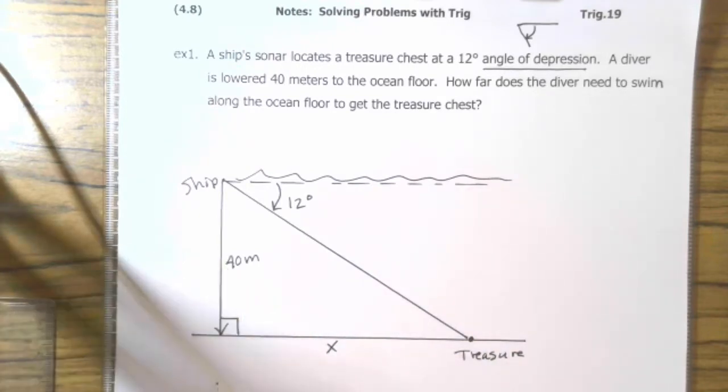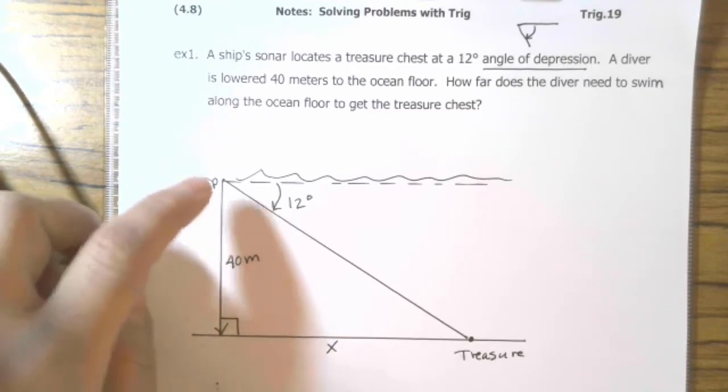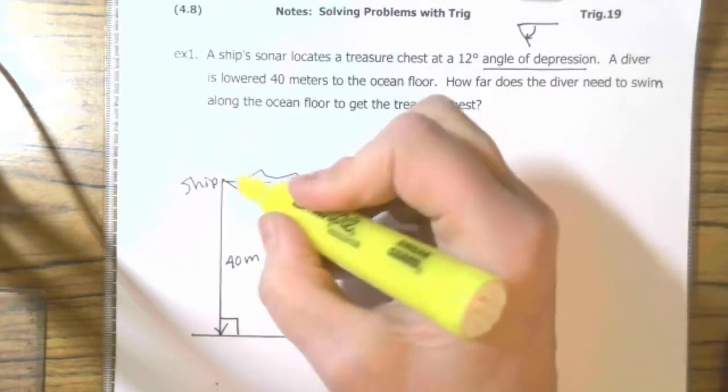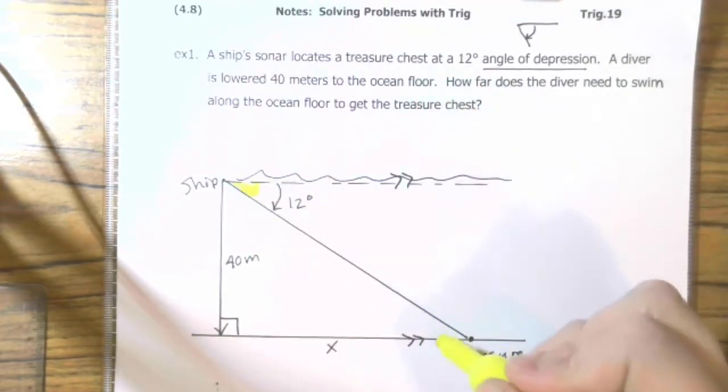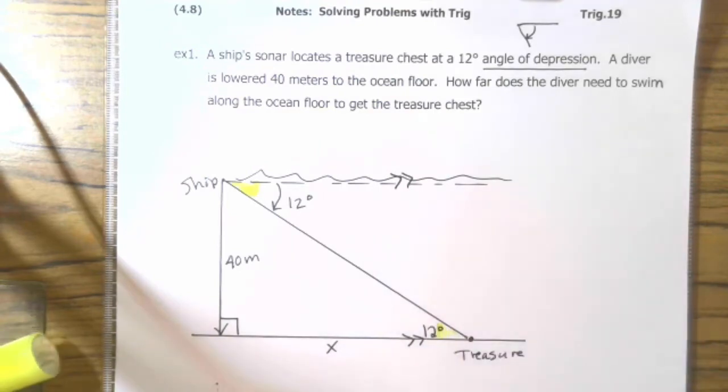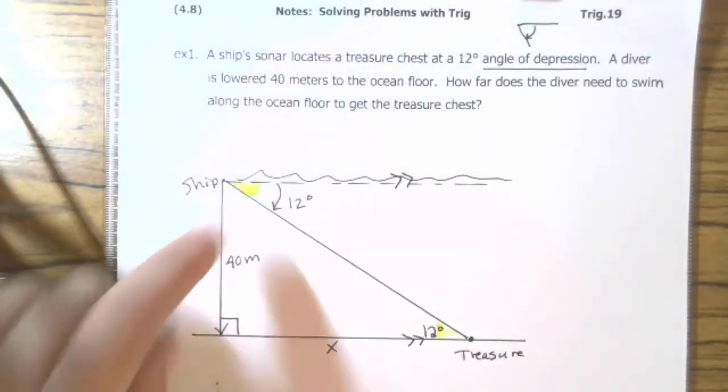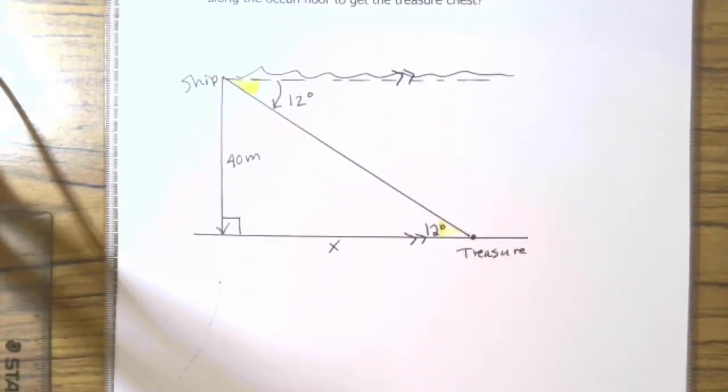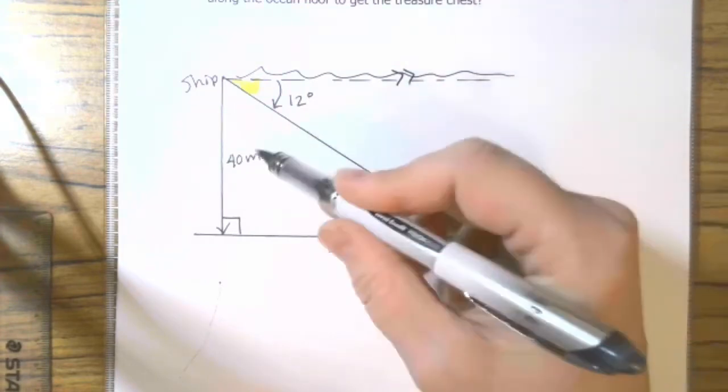So, right now, I have one side to a triangle and an angle. And there's a couple ways you can do this. One of them is by using the fact that alternate interior angles are congruent. So, you assume that the ocean floor and the water are parallel. So, alternate interior angles are congruent. That means that this is 12 degrees. That's one way to do it. You could also subtract from 90 and get the angle there. But I like 12 degrees because it's smaller.